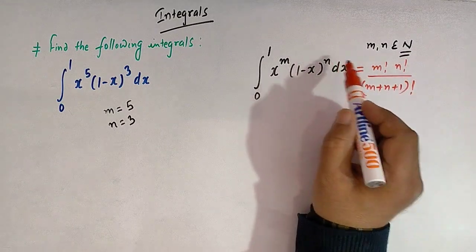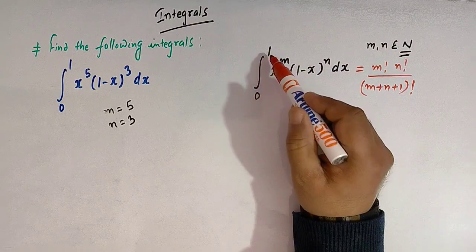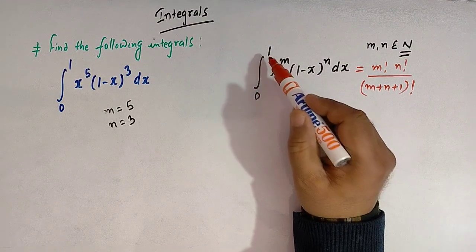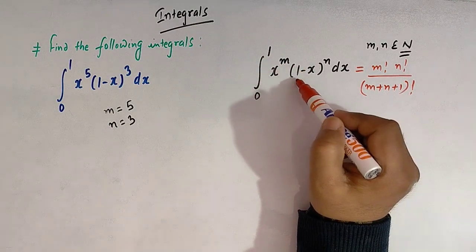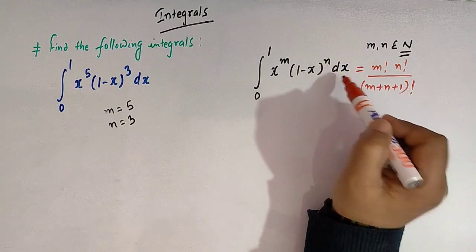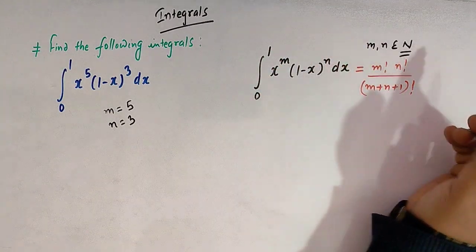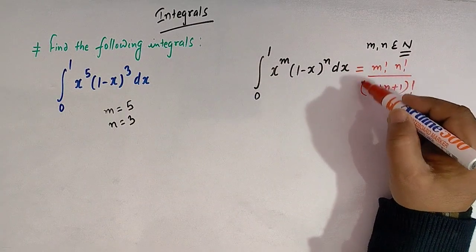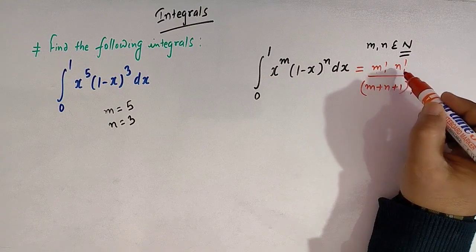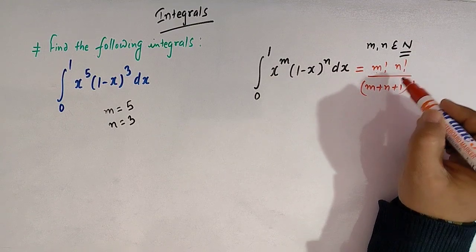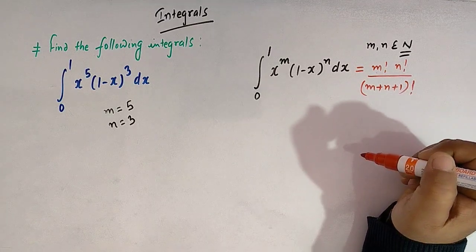So for the integral from 0 to 1 of x raised to m times 1 minus x raised to n dx, where the lower limit is 0 and the upper limit is 1, the direct value can be calculated from the expression: m factorial multiplied by n factorial, divided by m plus n plus 1 factorial.